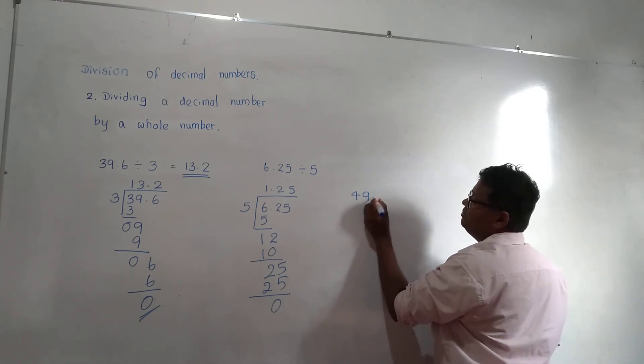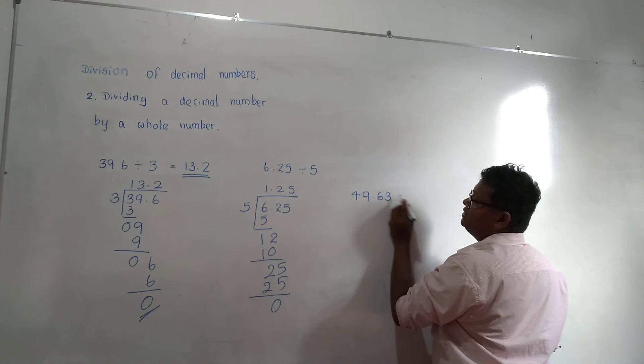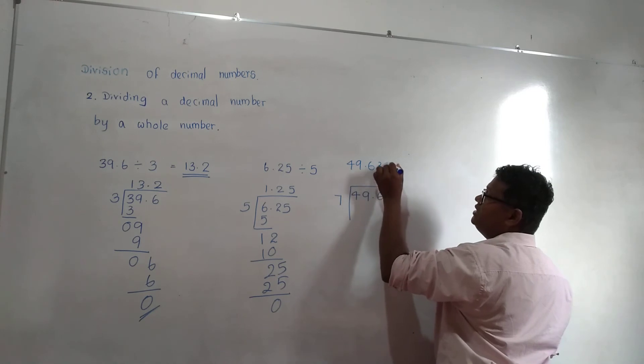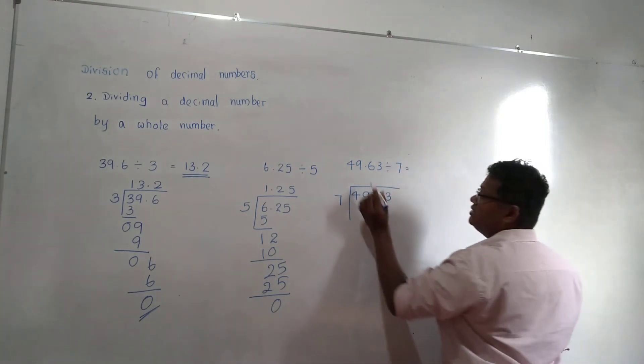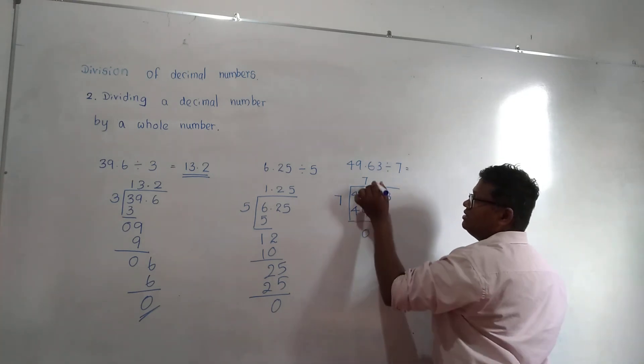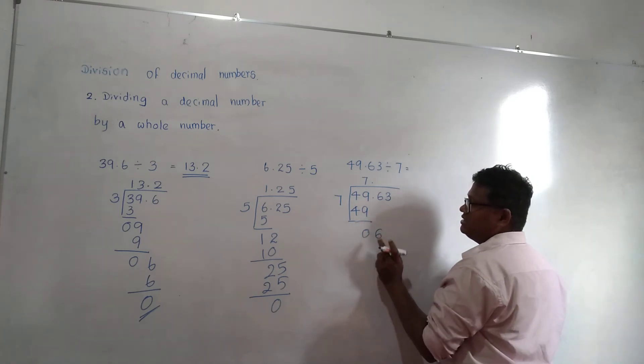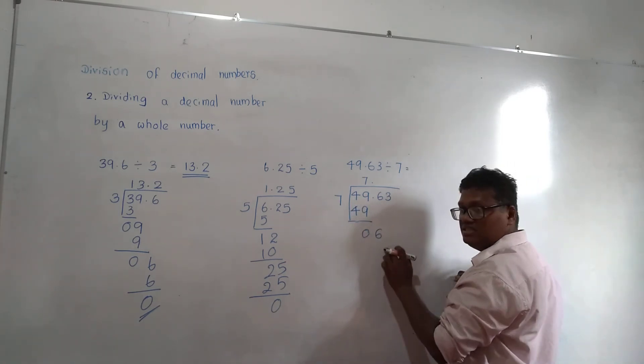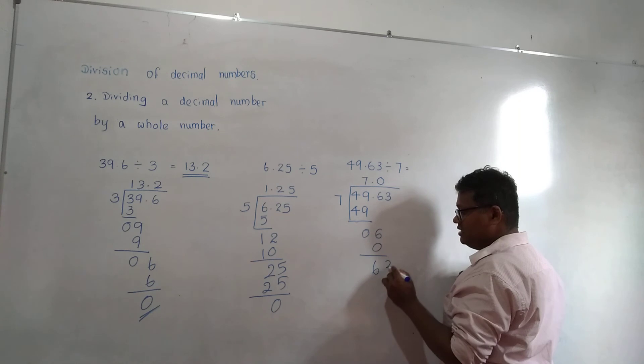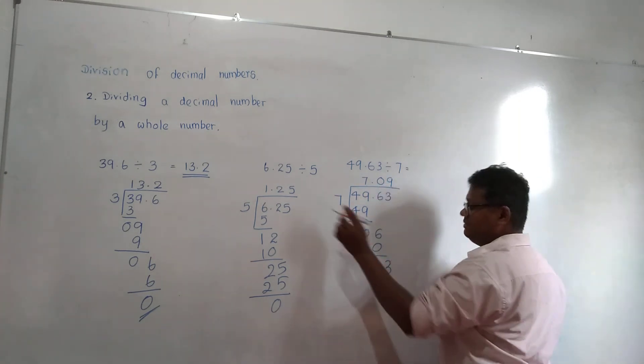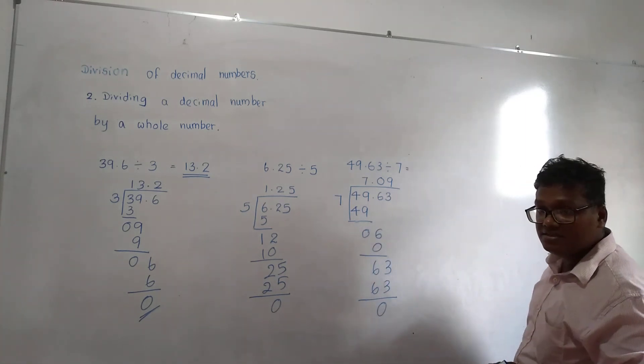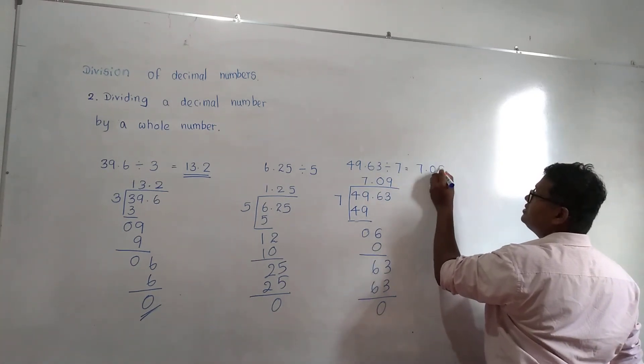49.6 divided by 7. 7 times 7 is 49, remainder 0. Decimal point. Get this 6: is there 7 in 6? No. 0 into 7 is 0. Get this 6: 63 means 7 times 9. 9 times 7 is 63. What is the answer? 7.09.